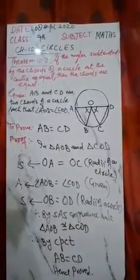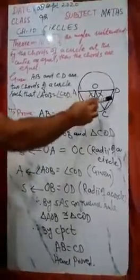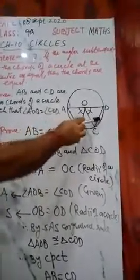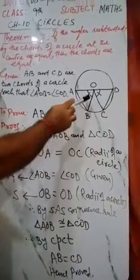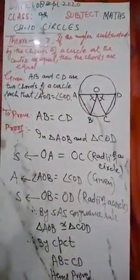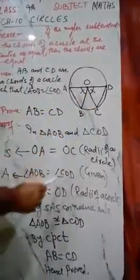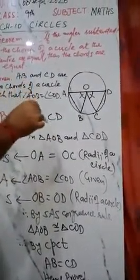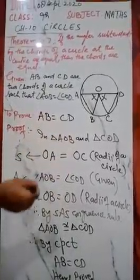तो बच्चों याद रखना है कि जब भी center में दो chords equal angles बनाती हैं, तो वो दोनों chords equal होते हैं। और Theorem 10.1 में दो chords equal दी थीं तो center में equal angles बनते हैं। अगर congruent circles हैं तो भी इसी तरह से करना है, जो आप Exercise 10.2 में देखेंगे।